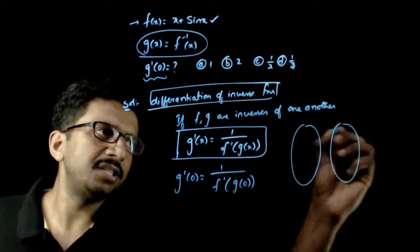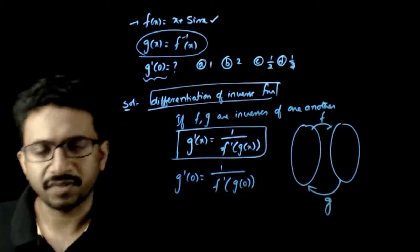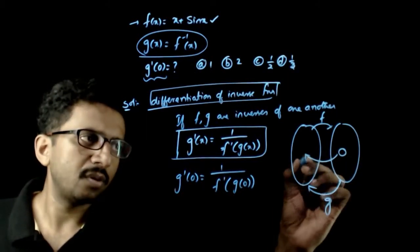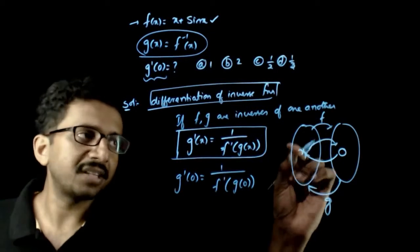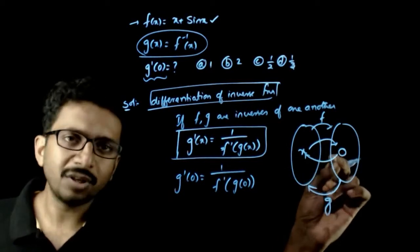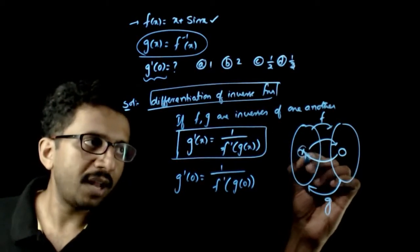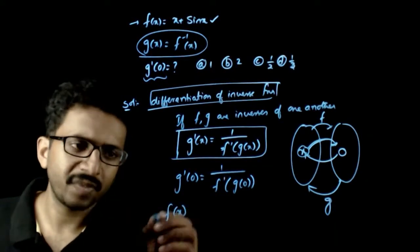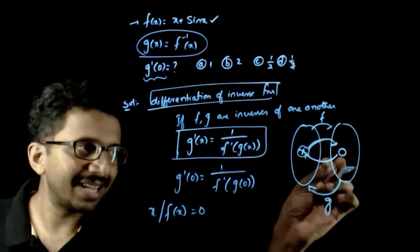Since f and g are inverse functions, g(0) means: for what value of x will f(x) equal 0? So g(0) is the x such that f(x) = 0. That is, sin x + x = 0, which gives x = 0. So g(0) is nothing but that value of x.